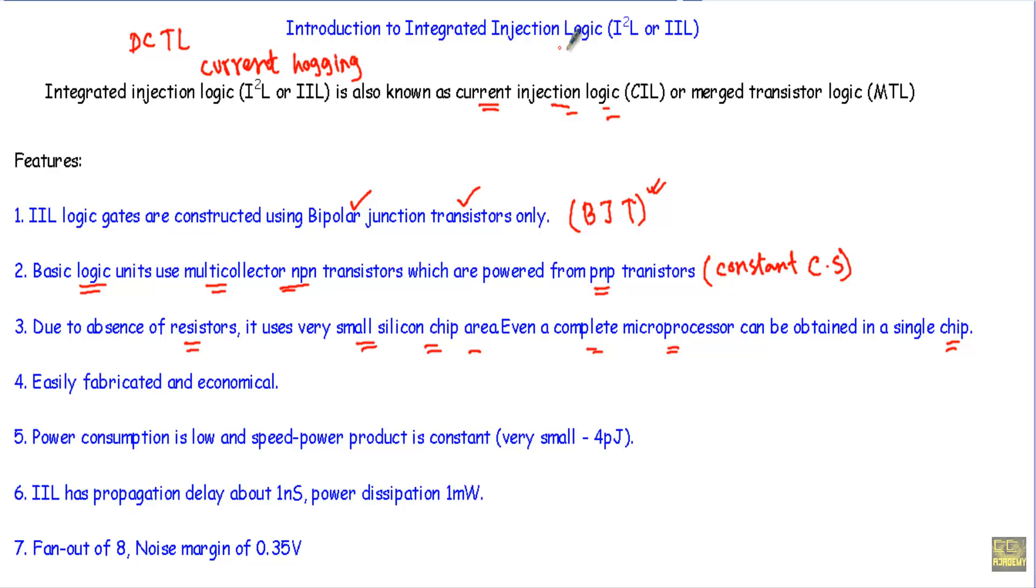As the Integrated Injection Logic circuits use only BJTs, that means less circuit components. Therefore, it can be easily fabricated and it will be economical.